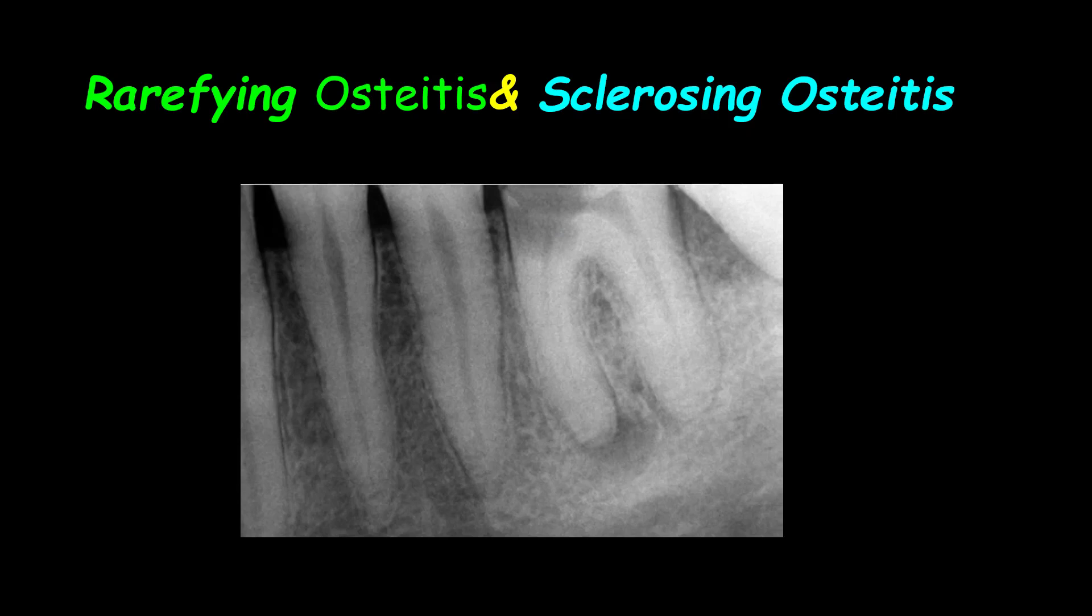In this decayed tooth, the green arrow is showing rarefaction in the apex caused by inflammation, called rarefying osteitis. Around the rarefaction, we have bone formation called sclerosing, so the blue arrow is showing sclerosing osteitis.